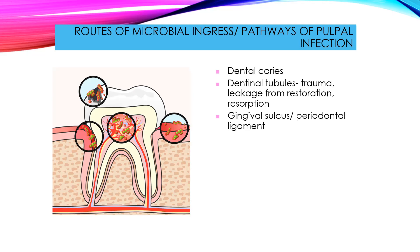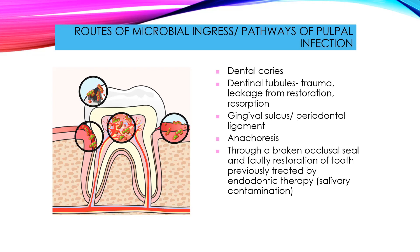This can either be through the gingival sulcus or periodontal ligament, through which the bacteria penetrate through either the dentinal tubules or the lateral canals. Then anachoresis, or the retrograde infection of the pulp — that is, from the root portion where bacteria localize in the pulpal tissue from the retrograde region because of decrease in resistance of the tissues. Another way microbes can ingress to the pulp is through a broken occlusal seal and faulty restoration of a previously endodontically treated tooth through salivary contamination.